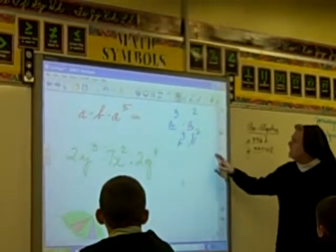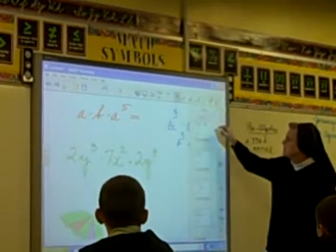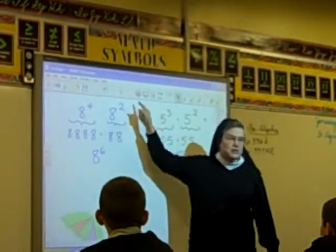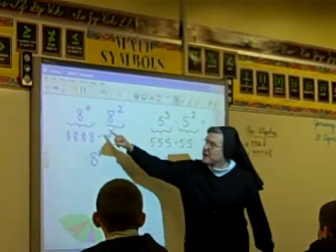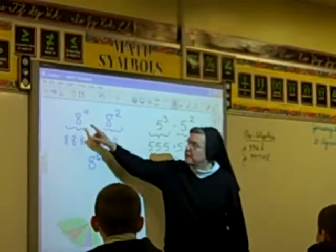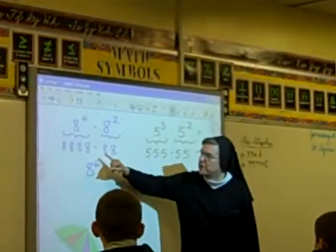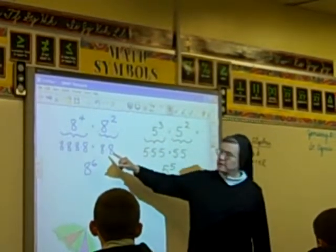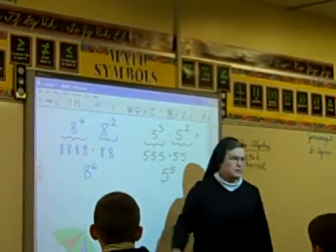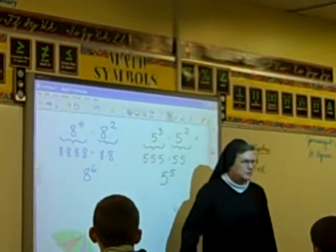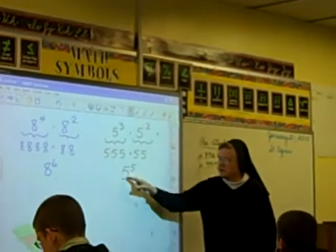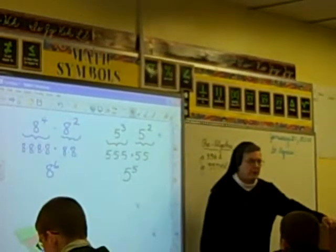So if I look at 8 to the 4th power times 8 squared — notice I have to be multiplying, not adding. I have the same base, so 8 to the 4th times 8 squared is 8 to the 6th power. Now take a look at that, and then look at this: 5 cubed times 5 squared is 5 to the 5th power.